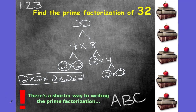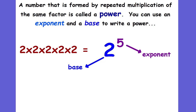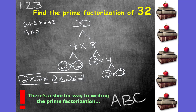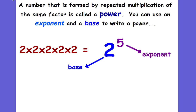But there's actually a shorter way to write the prime factorization, and this is called using exponents. Remember, when we had repeated addition, if we had 5 plus 5 plus 5 plus 5, instead of writing this all out, we could say there are 4 groups of 5, so we could say 4 times 5. Well, this is the same thing. There's a shorter way of writing repeated multiplication, and that's using powers. A number that is formed by repeated multiplication of the same factor is called a power.